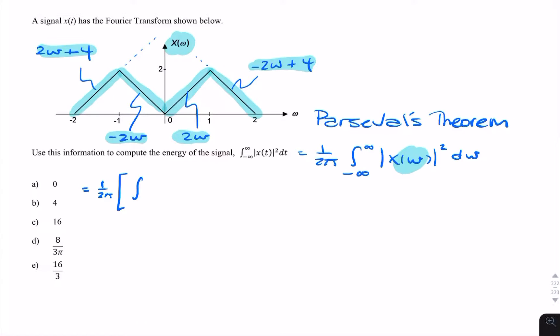The integral from minus 2 to minus 1 of (2ω + 4) squared dω, then the integral from minus 1 to 0, so that's from here to here, of (−2ω) squared dω plus the integral from 0 to 1.